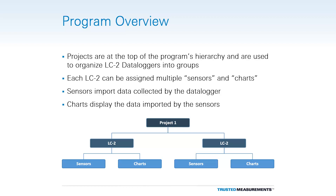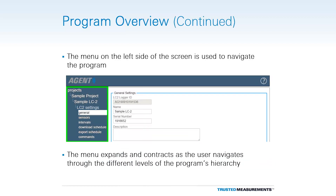Projects are at the top of the program's hierarchy and are used to organize LC2 data loggers into groups. Each LC2 can have multiple sensors and charts assigned to it. Sensors import data collected by the LC2, and charts display data imported by the sensors. The menu on the left allows the user to navigate through the various screens available at the current level of the hierarchy. As the program is navigated, the items in the menu will change accordingly.